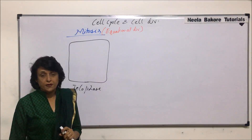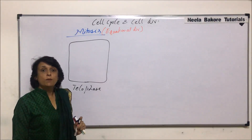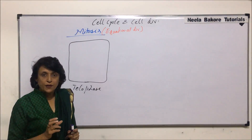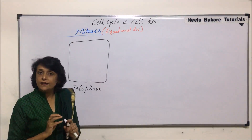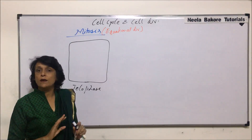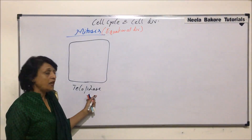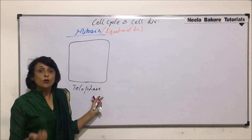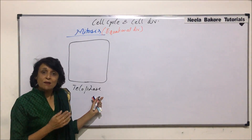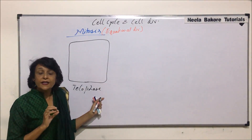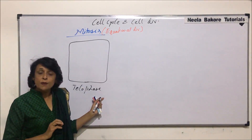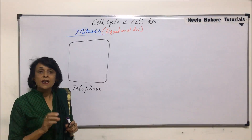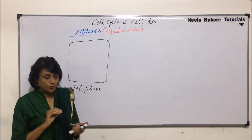Let us recall what happened in prophase. In prophase, including early prophase and late prophase, the nuclear membrane dissociates and completely disappears. So here in telophase, the nuclear membrane is going to reassemble and reappear around the chromosomes.